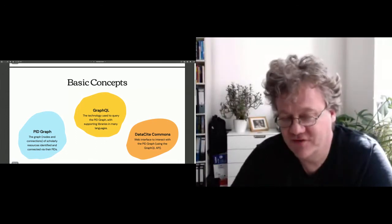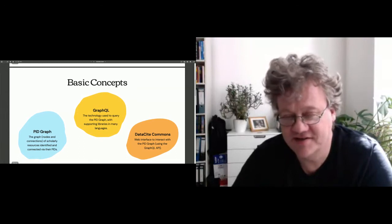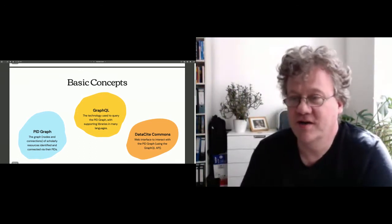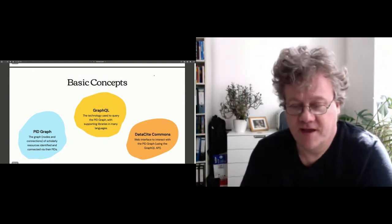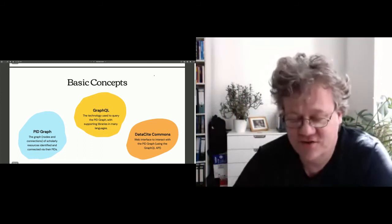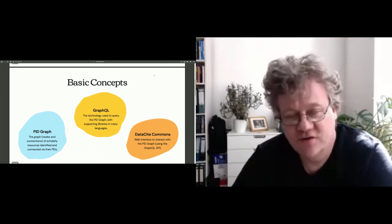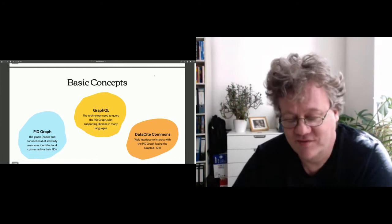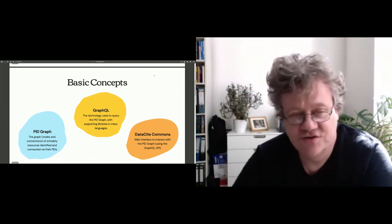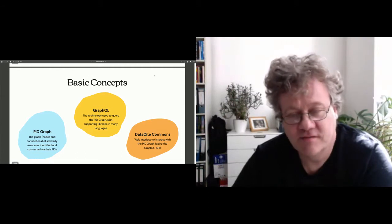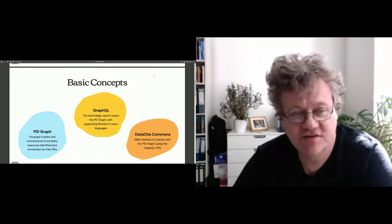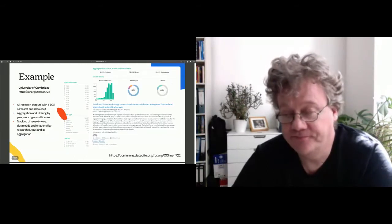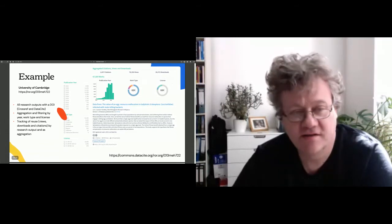The technology we used to build this graph is GraphQL — a widely popular technology, unfortunately not widely popular in the scholarly community. It is a query language for APIs and a nice fit for exploring a graph. For many people it is a replacement for REST APIs. The API that shows these graphs in a web interface is called DataCite Commons. One area where we are fairly strong is identifiers for organizations — we use the Research Organization Registry (ROR).